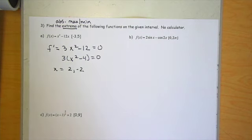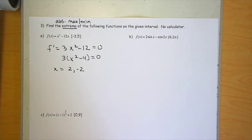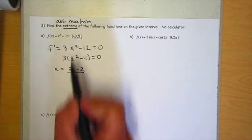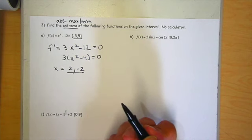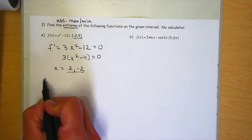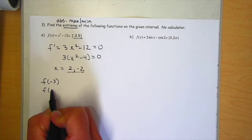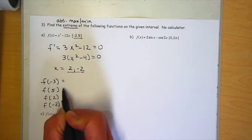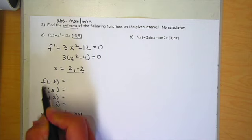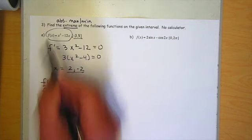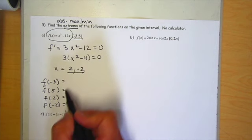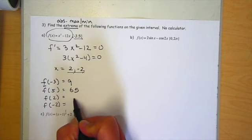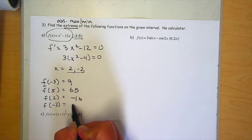The only places where you could possibly have an absolute max or min are critical numbers and endpoints. So these are the only places I need to check. So what I'm going to do is I'm going to take all of these values. I'm going to take my endpoints. I'm going to take my critical numbers, and I'm going to plug them back into the original function, so back into here. And if you do that, these are the values you'll get. You'll get 9 for this. For 5, you'll get 65. For 2, you'll get negative 16. And for negative 2, you'll get a positive 16.